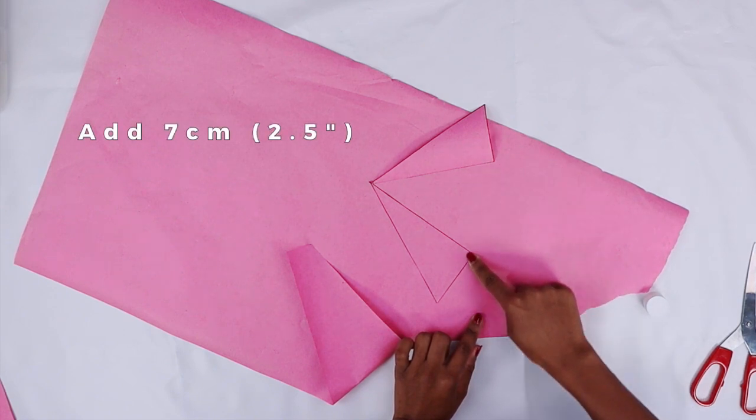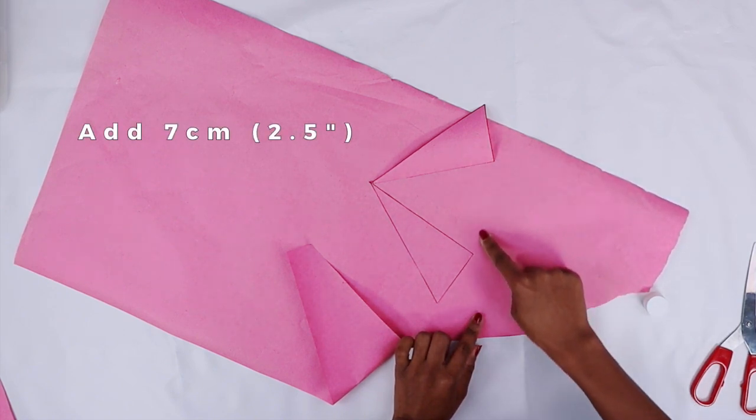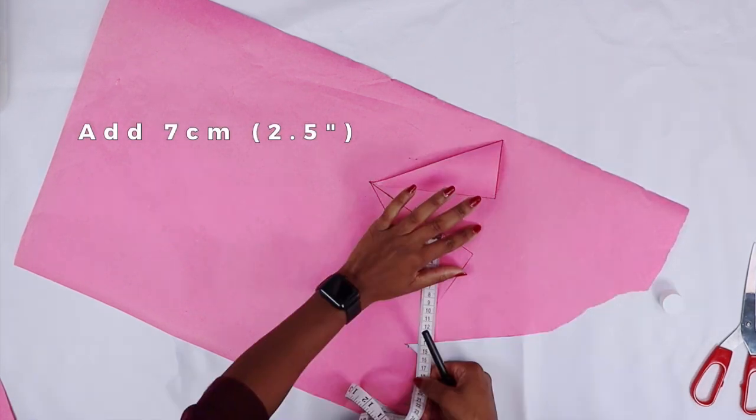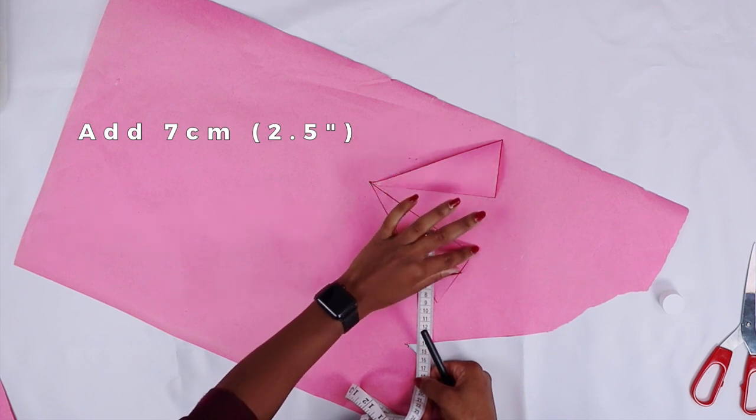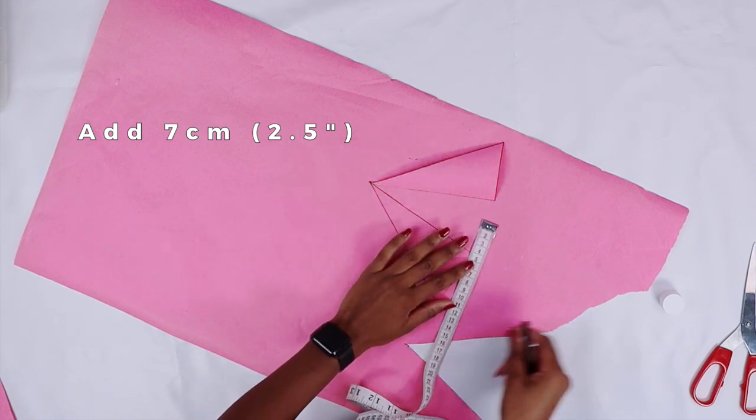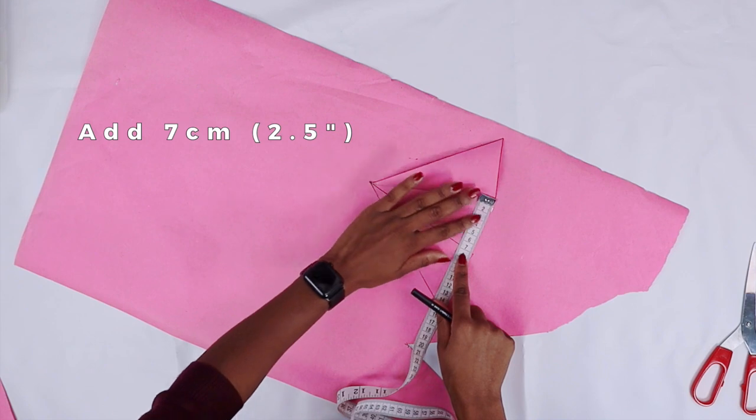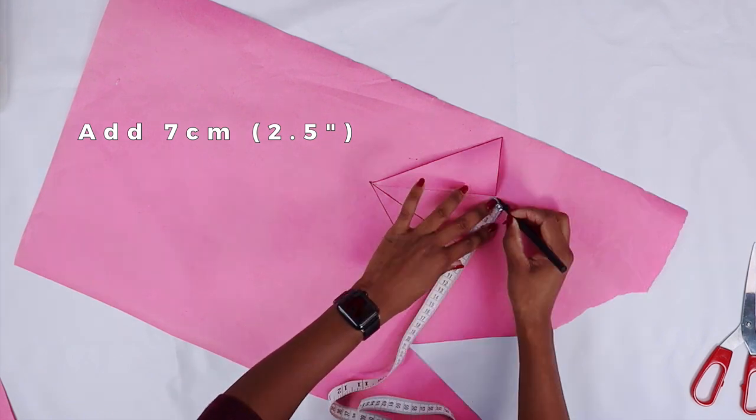Now to get a length for how much we're going to leave for the space in the middle, you can pretty much add as much as you want. I like mine to be very narrow, so I'm going to add seven centimeters.